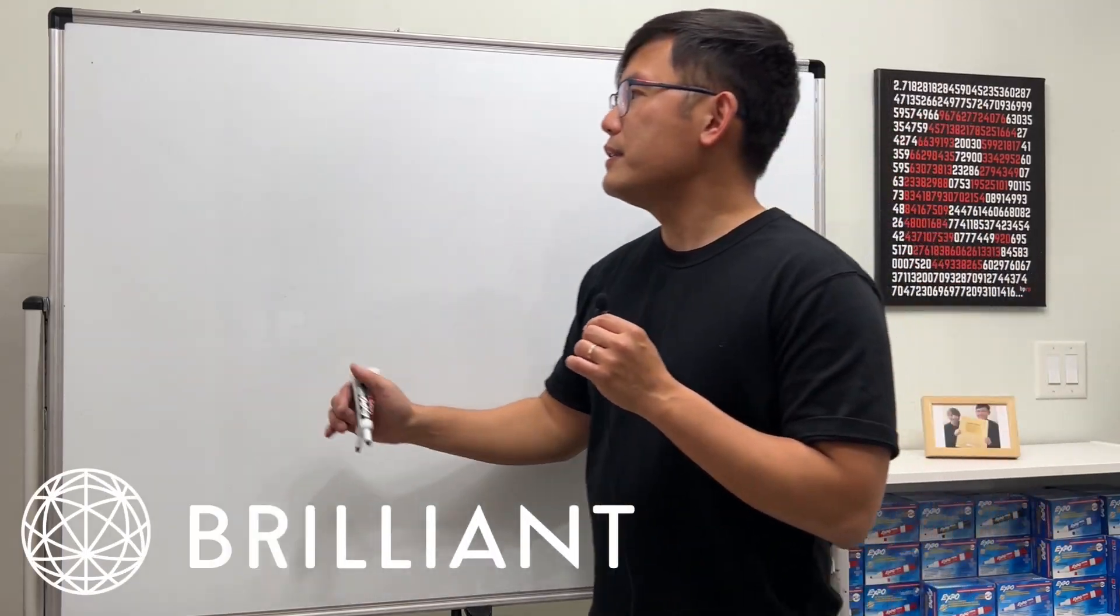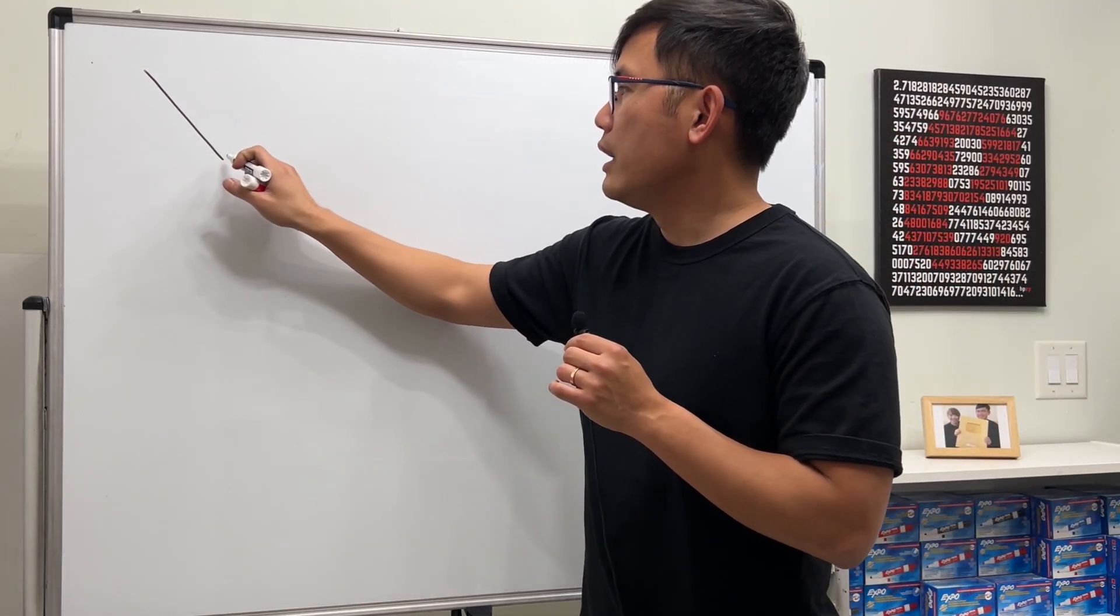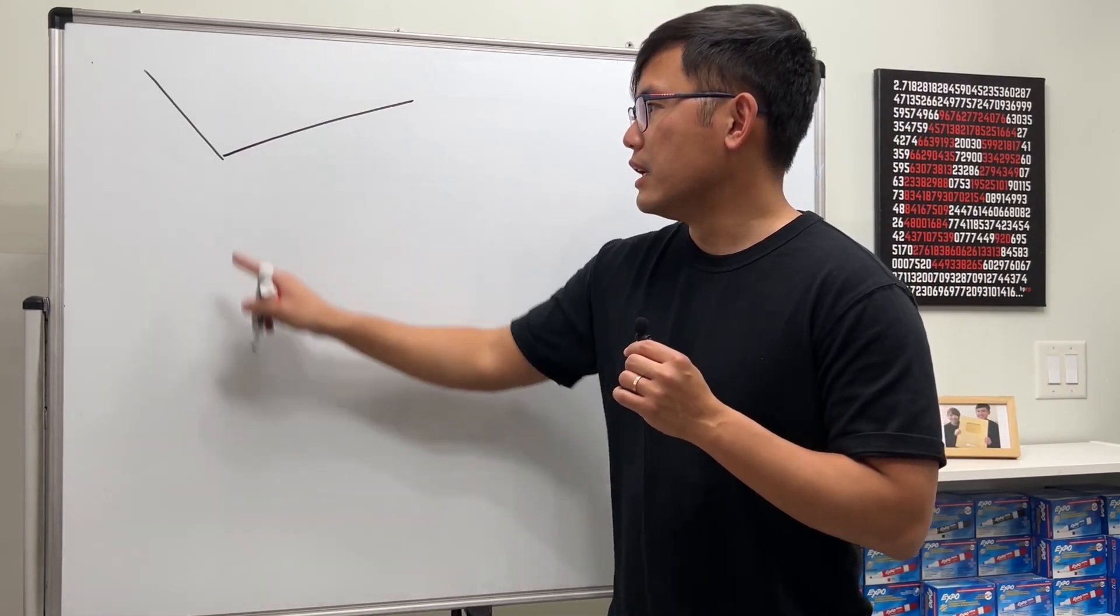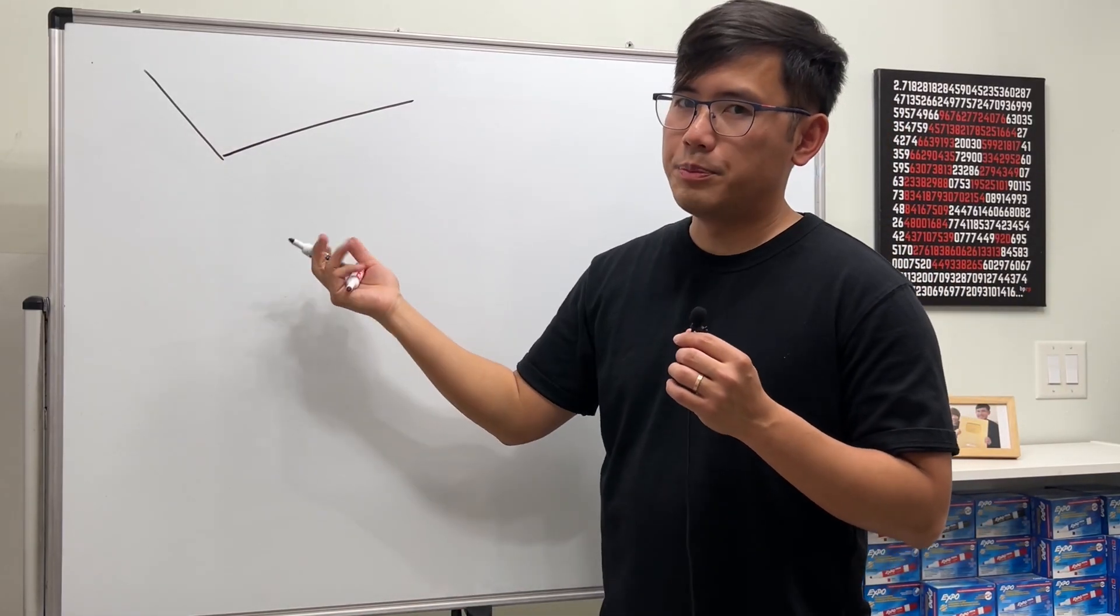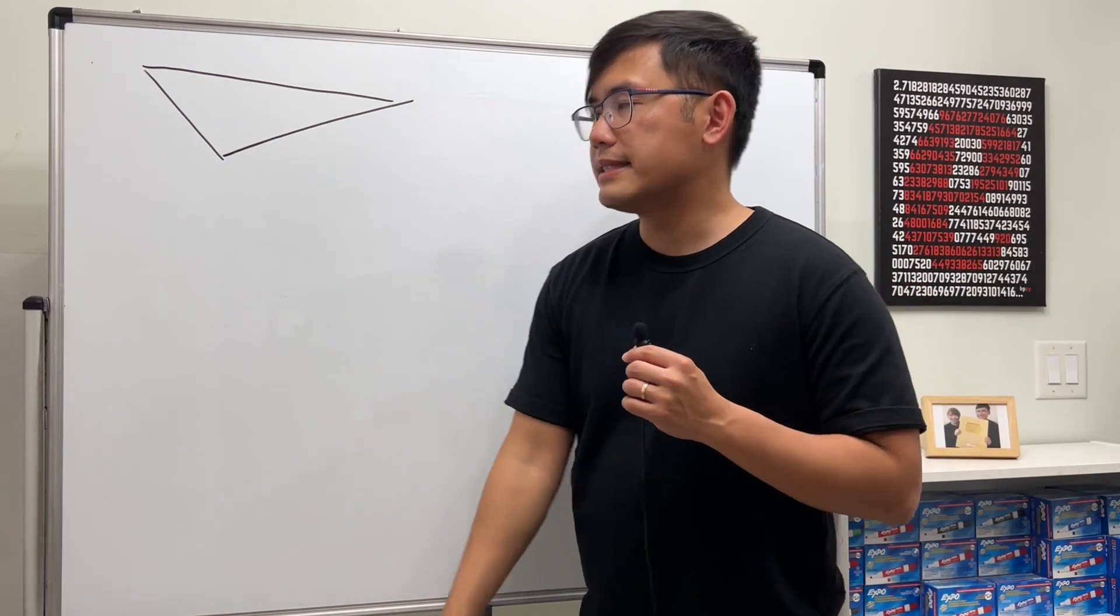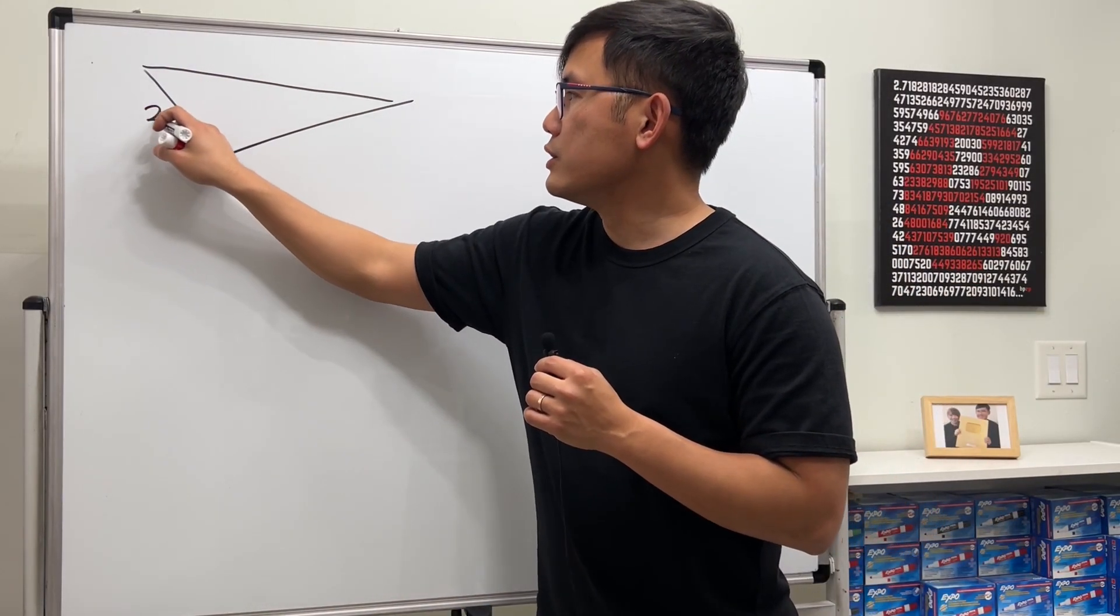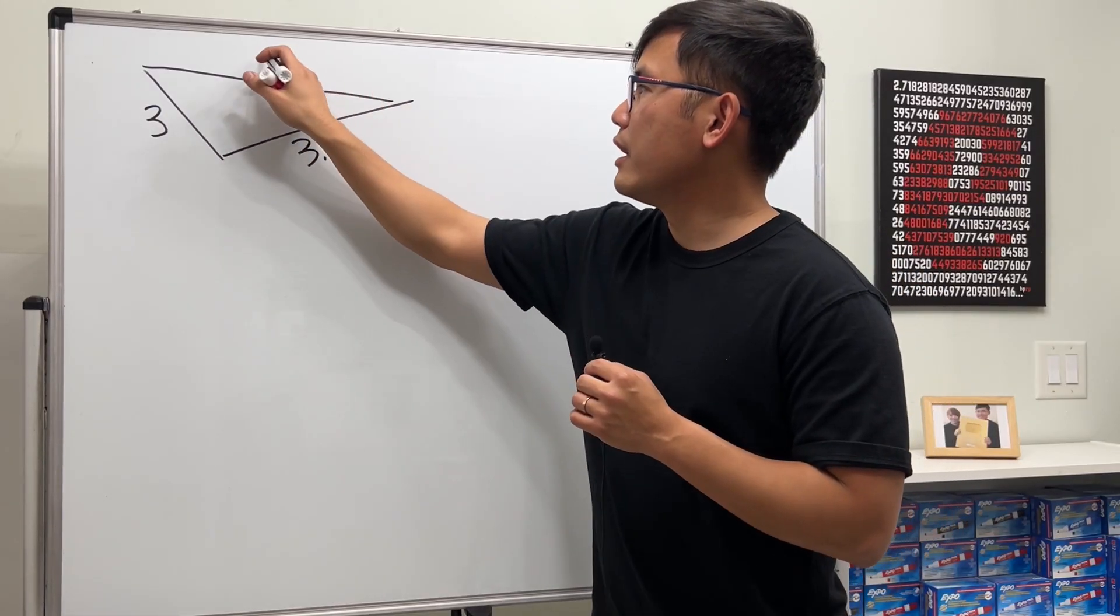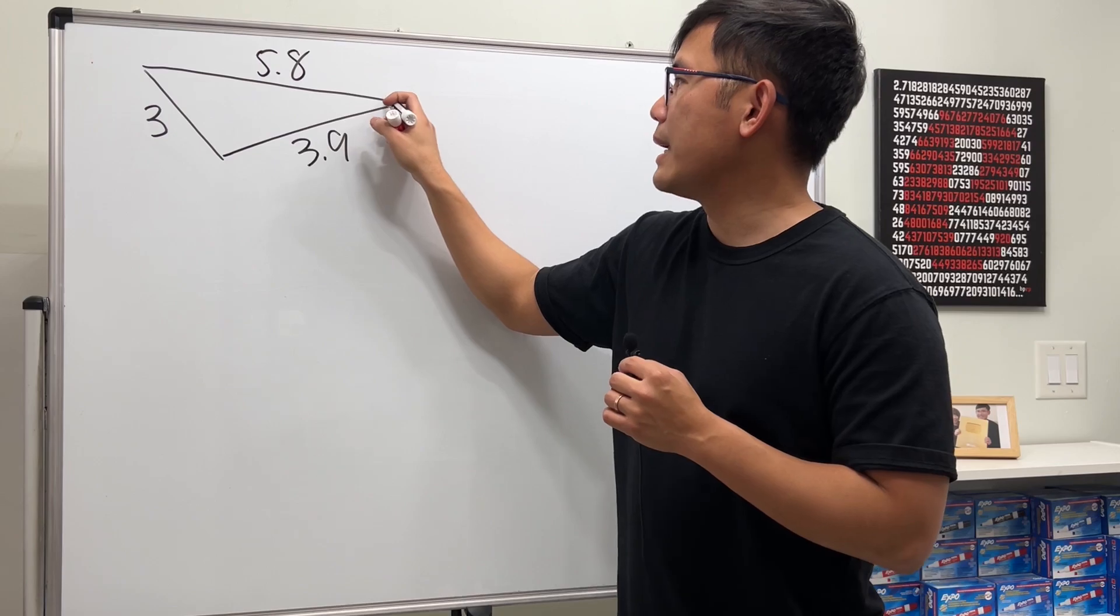This is how it goes. First, I'm going to give them a triangle. And you have to make sure that one of the angles is bigger than 90 degrees. So of course, this is the one that's bigger than 90 degrees. And I'm going to give them all three sides. This side right here is 3. This side right here is 3.9. And this side right here is the longest side, which is 5.8.